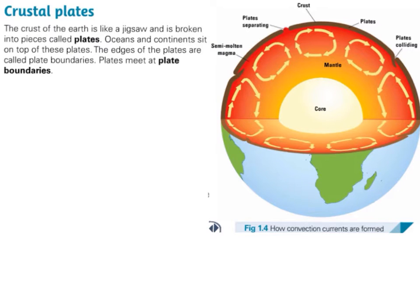Crustal plates. The crust of the Earth is like a jigsaw and is broken into pieces called plates. Oceans and continents sit on top of these plates. The edges of the plates are called plate boundaries, and plates meet at plate boundaries.